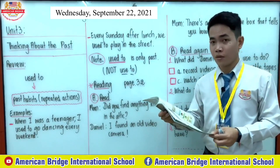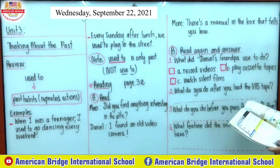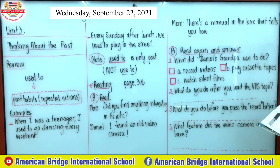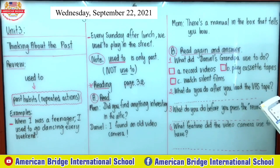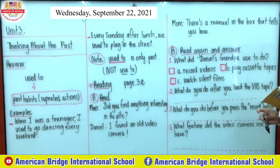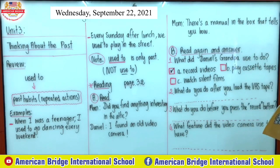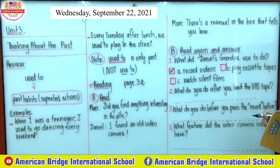After reading the user manual, let's move on to Part B: Read again and answer the questions. We have four questions. Question one: What did Daniel's grandpa used to do? The answer is letter A — Daniel's grandpa used to record videos when Daniel was a baby.